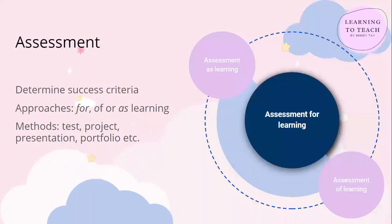The next step is to design assessment tasks. Essentially, we need to determine how the outcomes will be assessed before we determine the kind of activities to help students achieve these outcomes. Although assessment is usually at the end of the teaching-learning sequence of events, teachers should think about assessment and the success criteria first, in order to direct the process of learning towards the same goal.